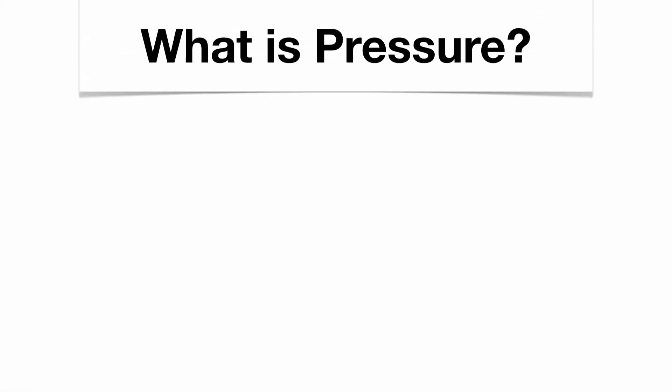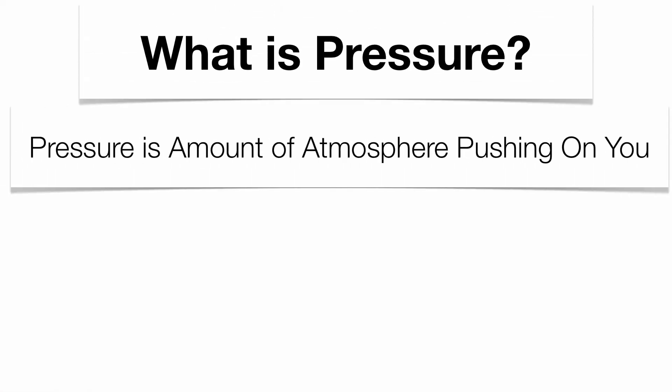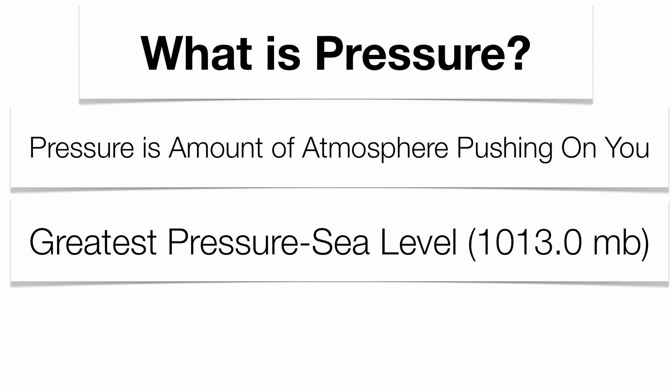Before we get into that, you have to understand what pressure actually is. It's the amount of atmosphere pushing down on top of you. You don't necessarily feel it here, especially at sea level, which is about 1,013.0 millibars. But if you travel up in an airplane and your ears pop either taking off or landing, that's a difference in pressure — your ears are very sensitive to that. Your greatest pressure is here at sea level, simply because you have all the troposphere, stratosphere, mesosphere, and thermosphere pushing down on top of your shoulders. The higher you go up in the atmosphere, the less pressure you're going to have.